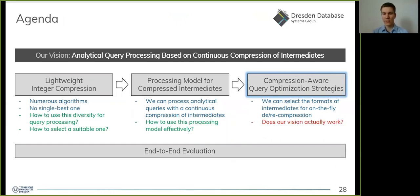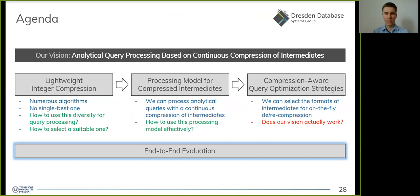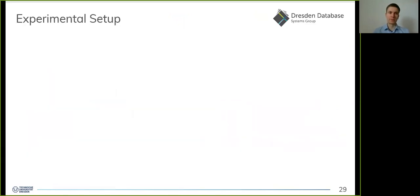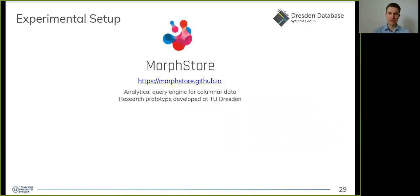We are now able to make effective use of our novel processing model for compressed intermediates. The final question is: does our vision actually work? Does it pay off — can we improve memory footprint and performance? With that, we come to our end-to-end evaluation. We implemented everything presented in MorphStore, our research prototype of an analytical query engine for columnar data.